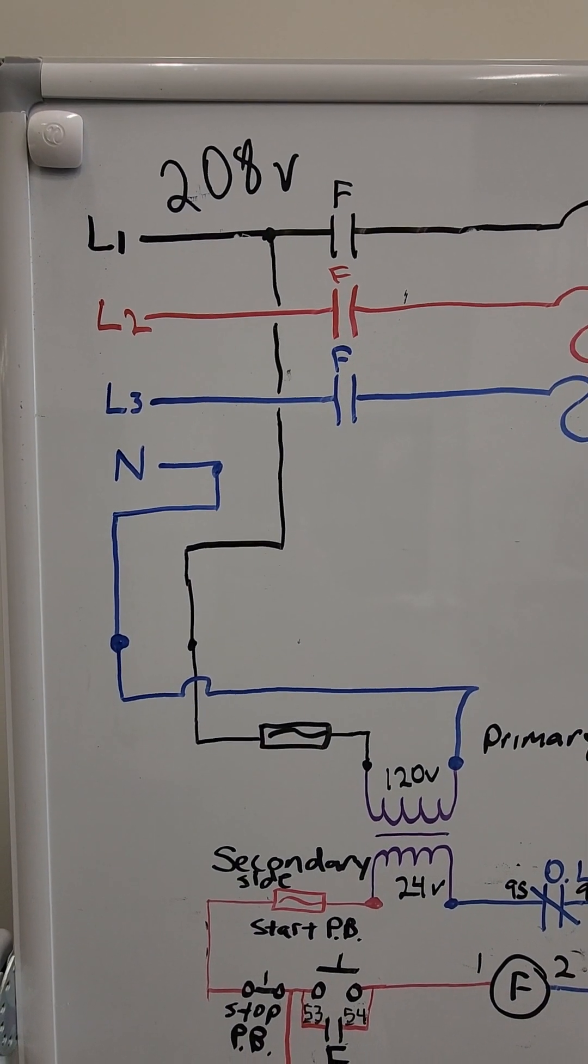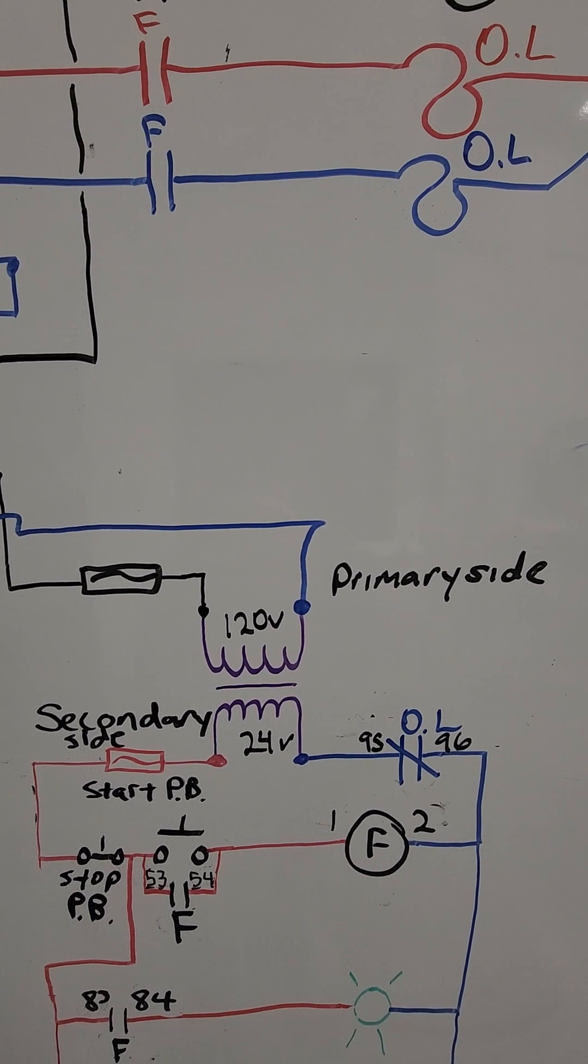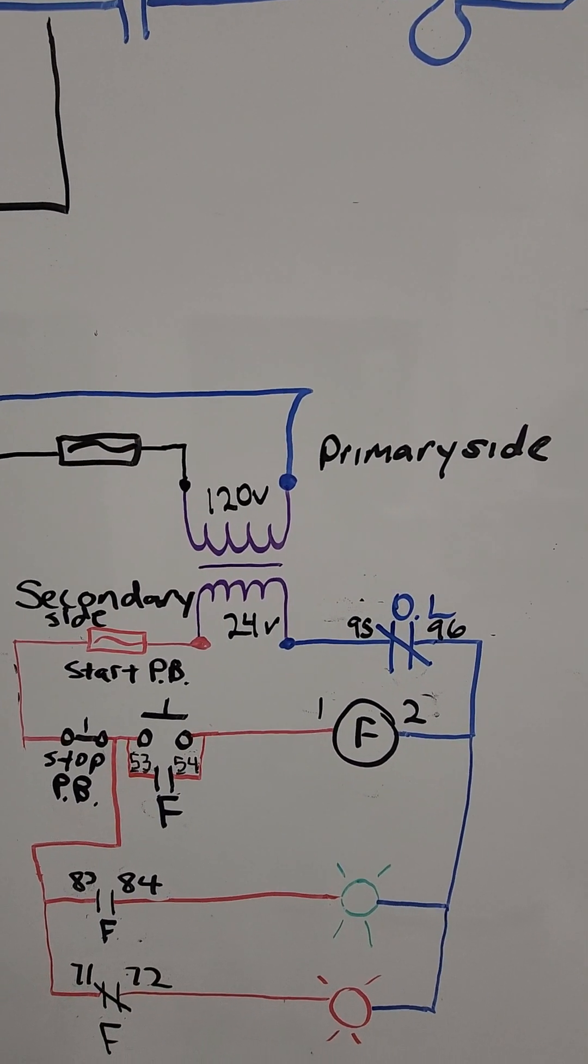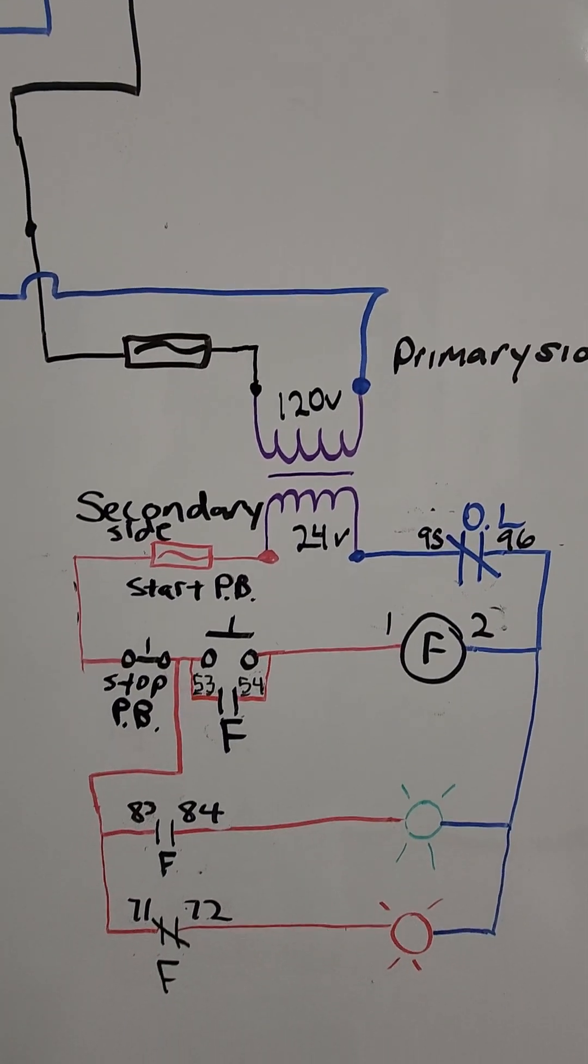You tap from line one in the neutral, go to the transformer of 120 to the primary side, come out of the low voltage side or the secondary side of 24 volts.